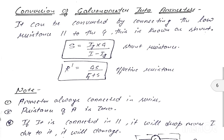Two important topics: conversion of galvanometer into ammeter and into voltmeter. To convert a galvanometer into an ammeter: connect a low resistance (shunt) in parallel to the galvanometer. The shunt value is: S = (Ig × G) / (I − Ig), where Ig is current through galvanometer, G is resistance of galvanometer, and I is main current.